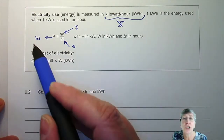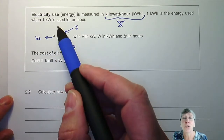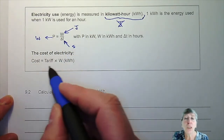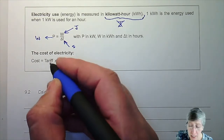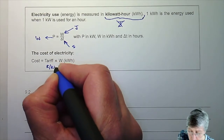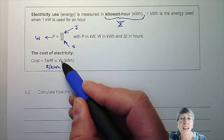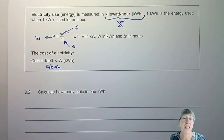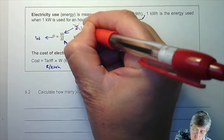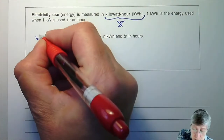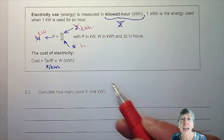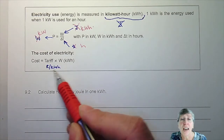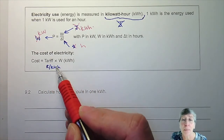One kilowatt hour is the energy used when one kilowatt is used for one hour. We want the cost of that electricity — how much we are spending. The tariff is always given in rand per kilowatt hour, and we multiply that by the energy. But the energy must be in kilowatt hours, not joules — so you want this answer in kilowatt hours.